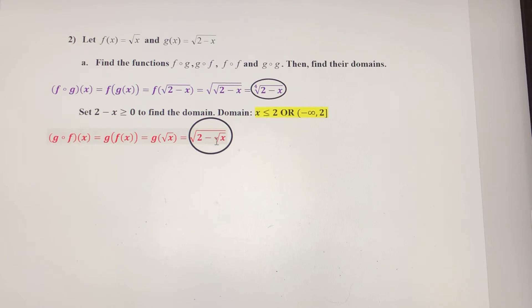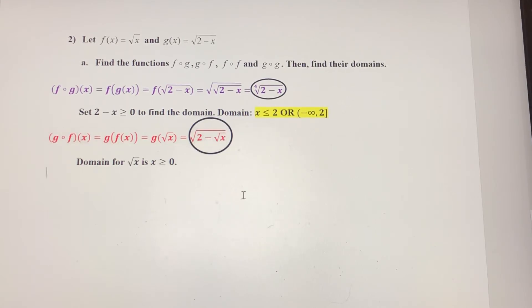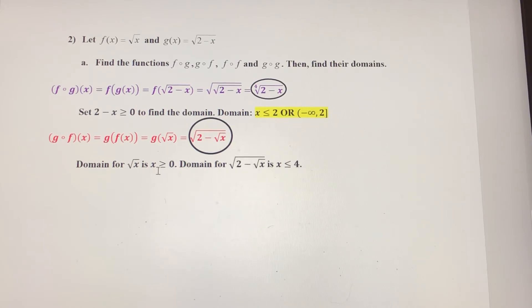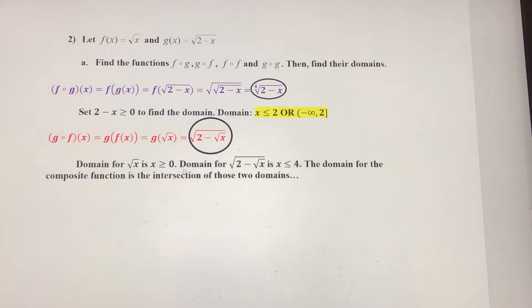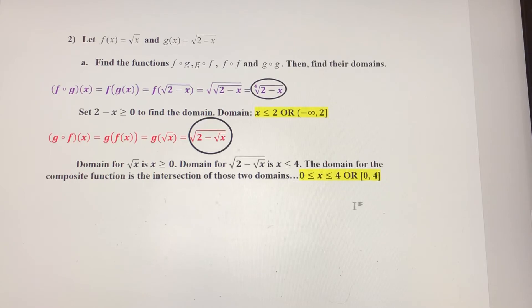The domain here is a little bit more complicated. First, this square root of x — x has to be non-negative, so the domain for that part is x is greater than or equal to zero. Then this entire expression 2 minus radical x has to be non-negative. When I solve 2 minus radical x greater than or equal to zero, I get x has to be less than or equal to 4. So one part of the domain is x greater than or equal to zero, and the other part is x less than or equal to 4. The domain of this composite function is the intersection of those two domains, which is x between 0 and 4 inclusive — written as the interval [0, 4].